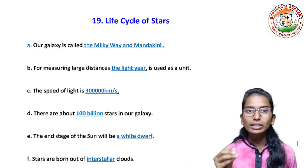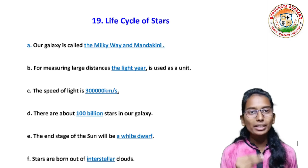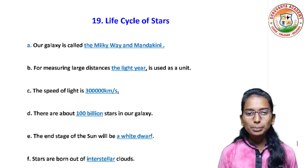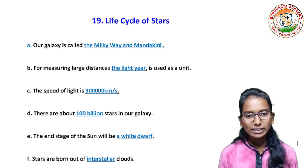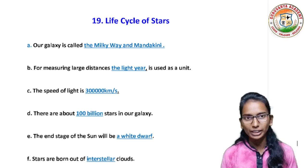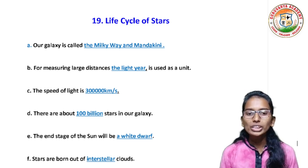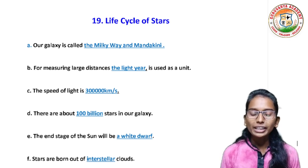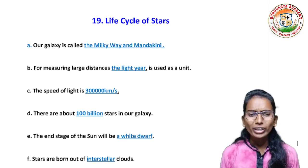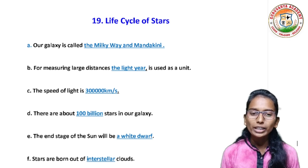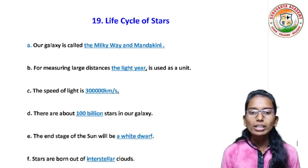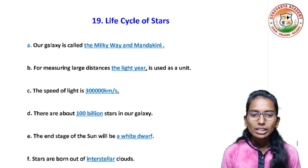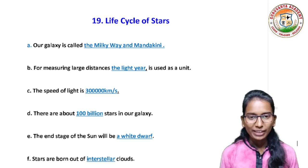First question: fill in the blanks. First question — our galaxy is called dash dash. Answer: the Milky Way and Mandakini. Second, for measuring large distances, the dash dash is used as a unit — that is the light year.